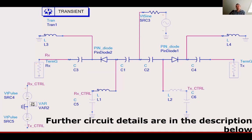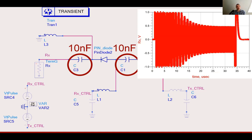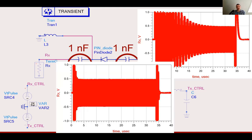Let's consider the case when the receiver port is connected to the common antenna port on the top of the circuit. The RF signal will flow through the capacitors C1 and C3. If the value of the capacitors is 10 nF, the signal at the receiver port settles approximately 30 microseconds after the switch was turned on. Now, if we change those capacitors to 1 nF, the dead time is significantly lower.